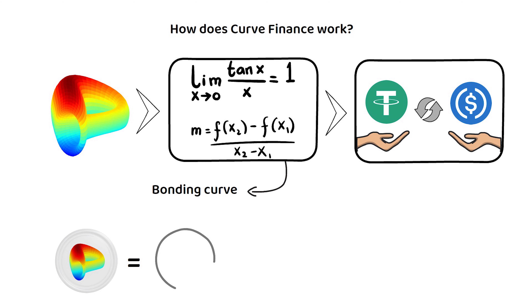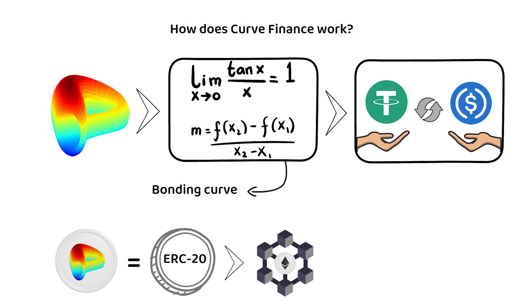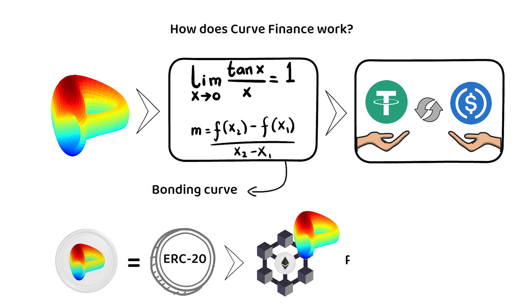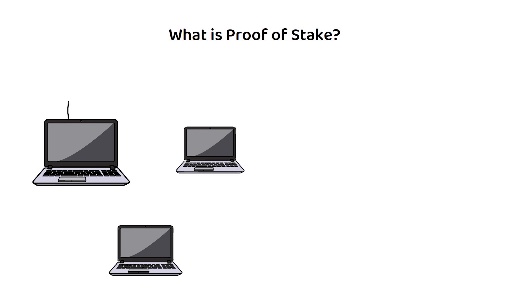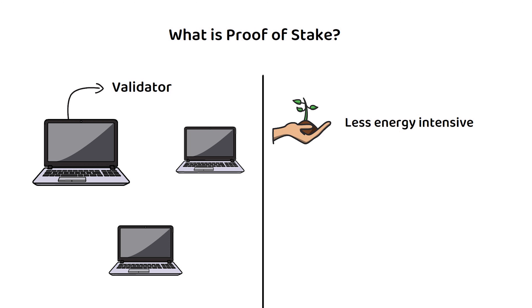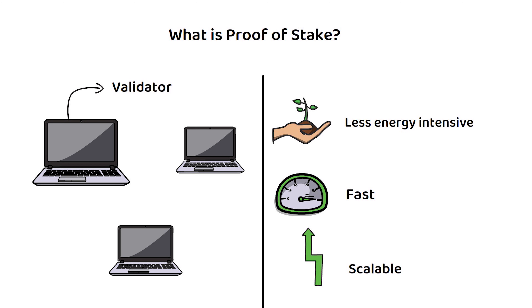CRV is an ERC20 token, with ERC20 being a token standard blueprint that allows compatibility with the Ethereum network. This means the Curve platform is built on top of the Ethereum blockchain and uses its Proof of Stake consensus mechanism and validators. Proof of Stake uses selected validators to verify transactions, rather than making the entire network compete to solve a puzzle like in Proof of Work, making it less energy intensive, quicker, and more scalable than Proof of Work cryptocurrencies like Bitcoin.